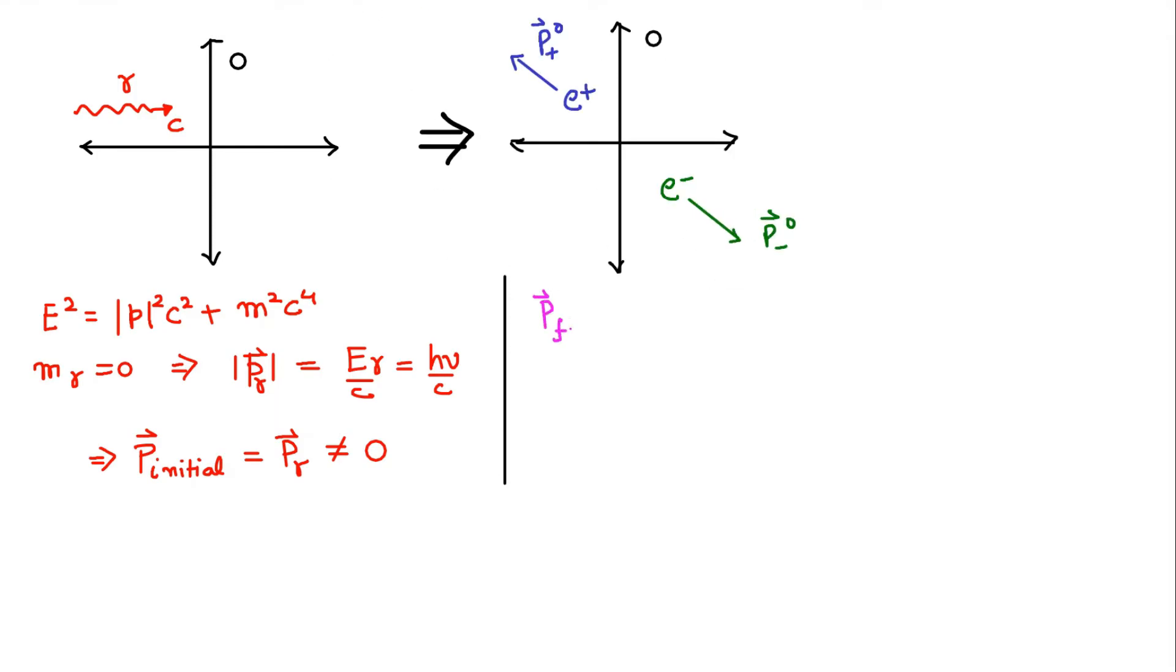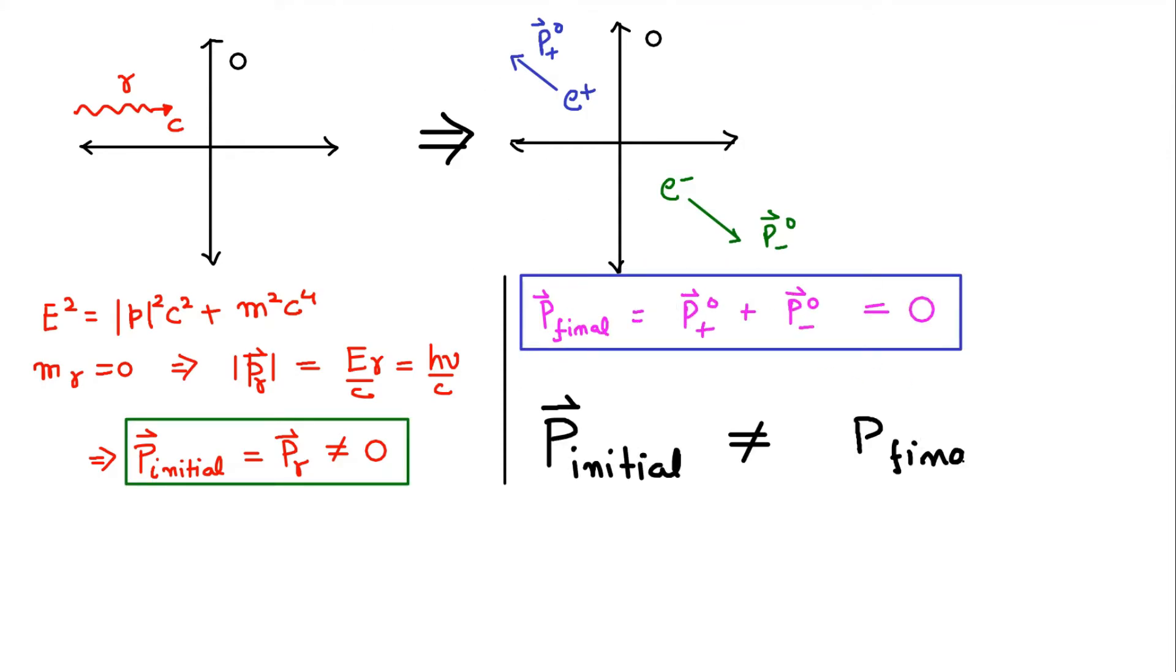But the net momentum after pair production has occurred is zero. This is a violation of the law of conservation of momentum as the net initial momentum does not equal the net final momentum.